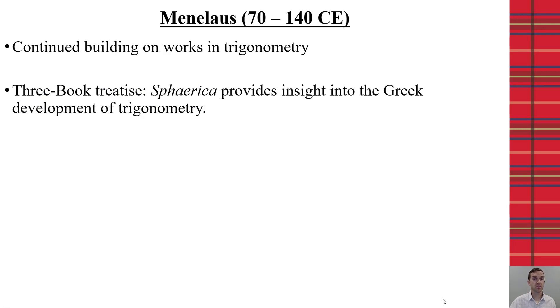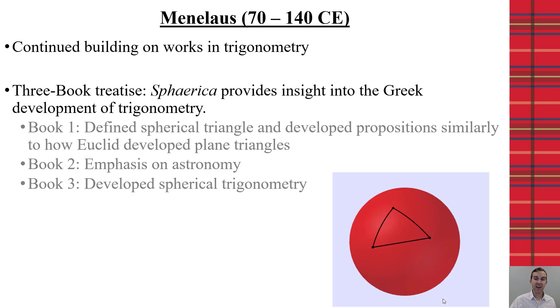Now, also at the turn of the century, we have Menelaus, who continued on the works of Hipparchus around the concepts of trigonometry. His three book Treatise on Spherica provides a lot of the insights into how the Greeks were treating trigonometry at that time. And he focused especially on the idea of the sphere and spherical triangles to start in his first book, just like we think about Euclid and what Euclid did for triangles in the elements. Then, his second book focused primarily on astronomy and propositions in astronomy, whereas the third book then took all sorts of concepts of spherical trigonometry, well beyond just the triangle.